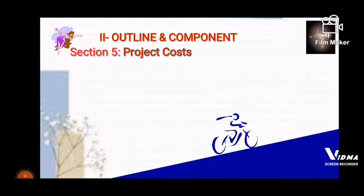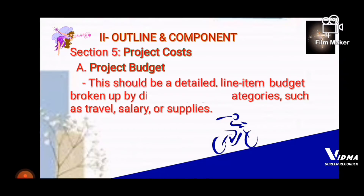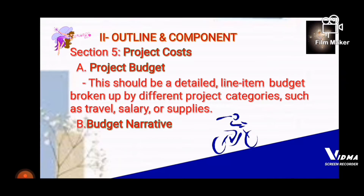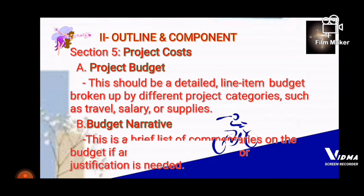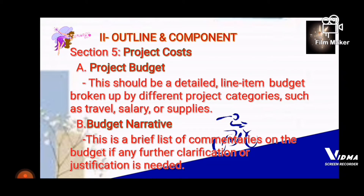Section five covers Project Cost. The Project Budget should be a detailed line-item budget broken up by different project categories such as travel, salary, or supplies. The Budget Narrative is a brief list of commentaries on the budget if any further clarification or justification is needed.